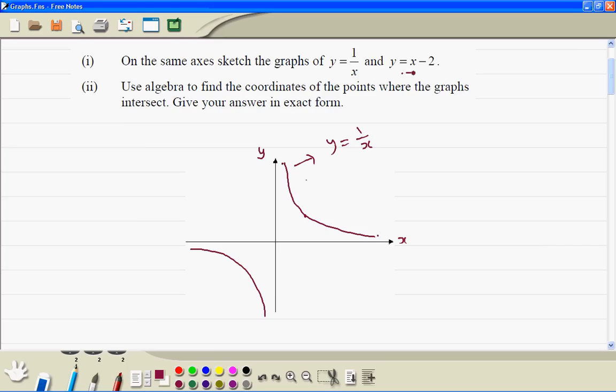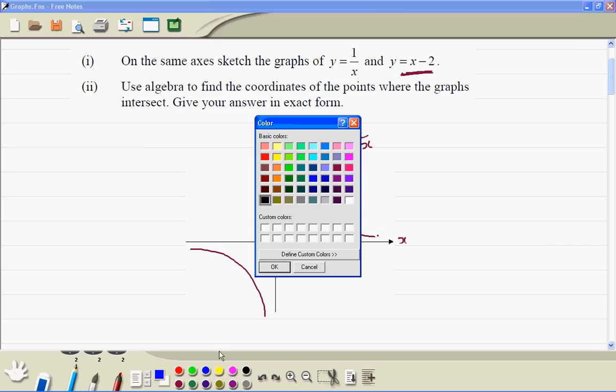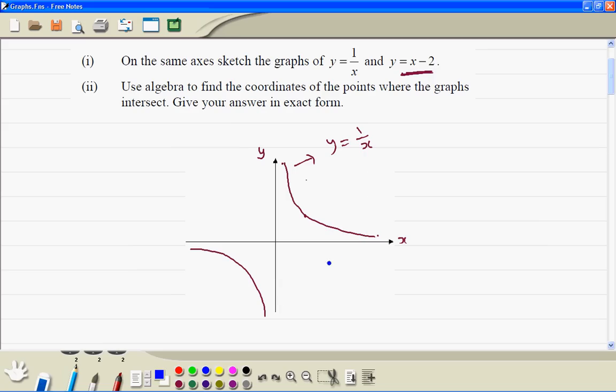Now we sketch the graph of y is equal to x minus 2. So when x is 0, y is equal to minus 2. So there is a point somewhere here, minus 2.